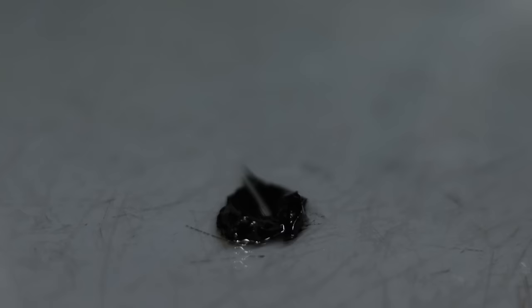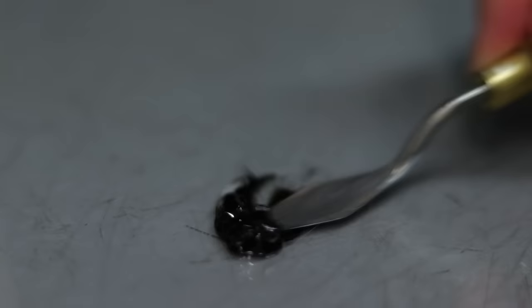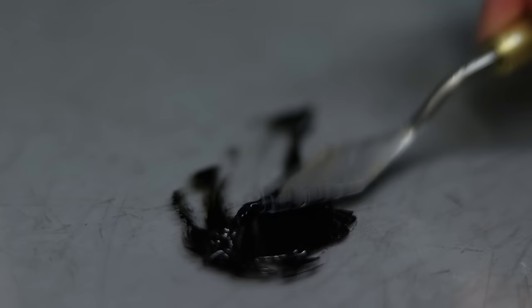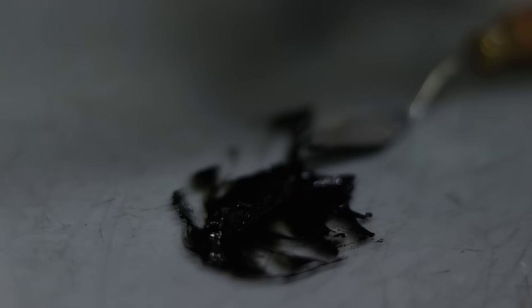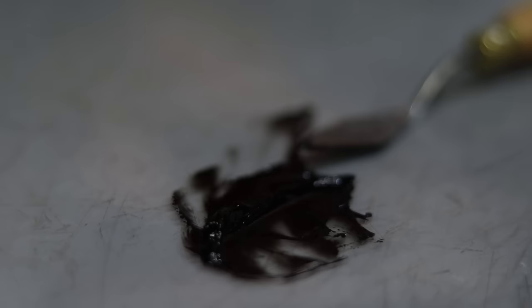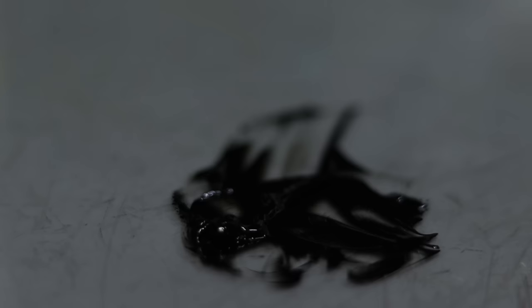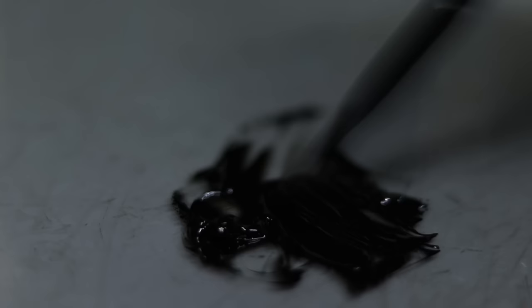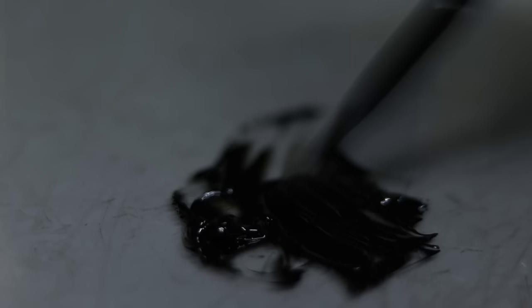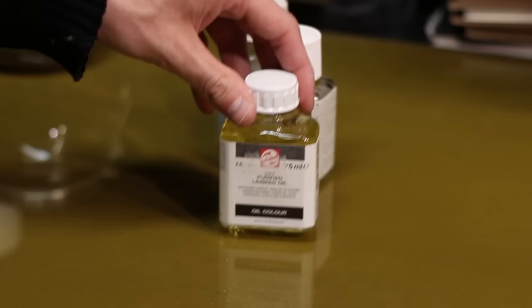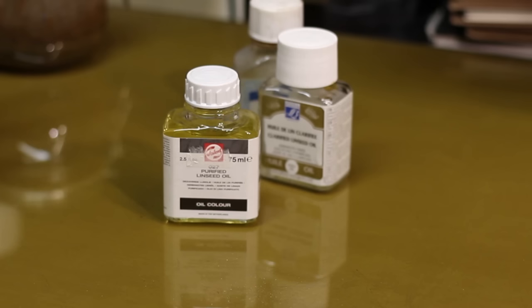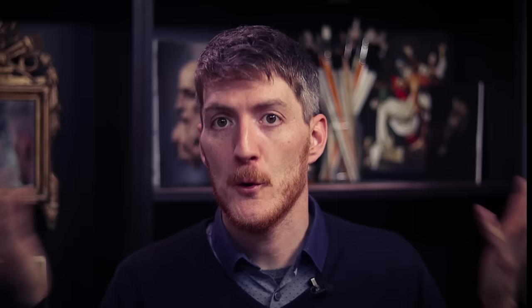I'm just adding 1 or 2 drops of medium to my ivory black. The medium is like using water with gouache or acrylics, except that we have to use something different. A medium is mainly composed of a binder and a solvent. The binder is a drying oil which hardens after a certain amount of time and keeps the paint film stable over time. Without a binder, paint would just be powder — it would just blow away.